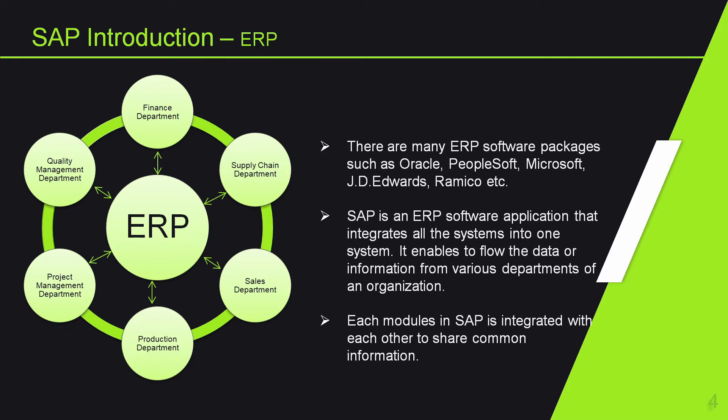The simplest way to define ERP is to think about all core processes that are required to run a company, such as human resources, manufacturing, supply chain, finance, procurement, etc. ERP integrates these processes into a single system.